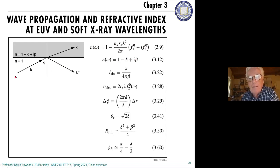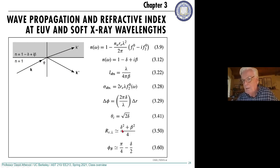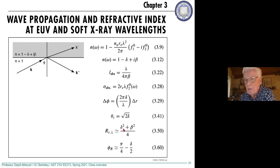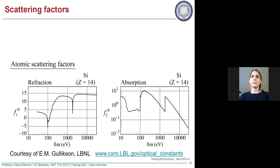We'll write the refractive index conveniently as n = 1 - δ + iβ. Looking at the boundary between vacuum and a material, we'll see how Snell's law emerges immediately from applying boundary conditions. We'll look at reflections for different angles — at normal incidence the reflection coefficient depends on δ² + β², and both are very small at X-ray wavelengths.